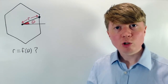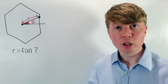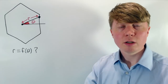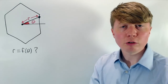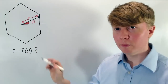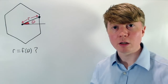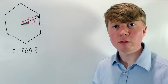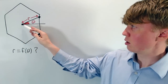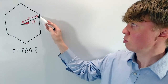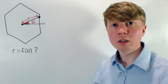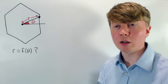We're going to look at how to describe regular polygons using polar coordinates. We're essentially looking for an equation of the form r equals some function of theta, which will give us the radius, or the distance, from the centre to each of the points on our regular polygon.